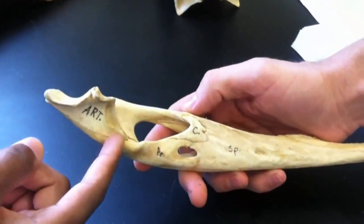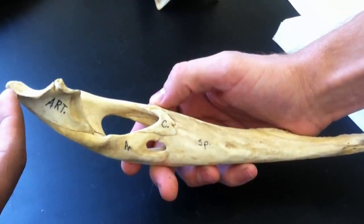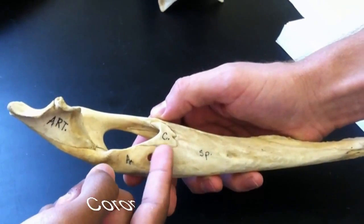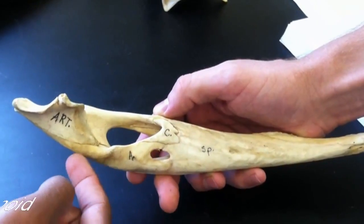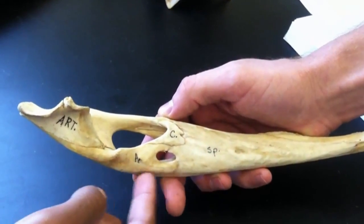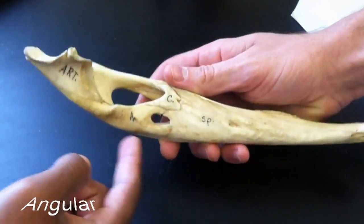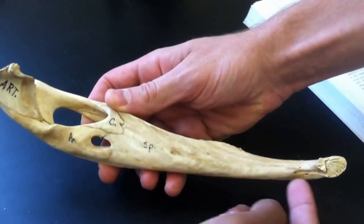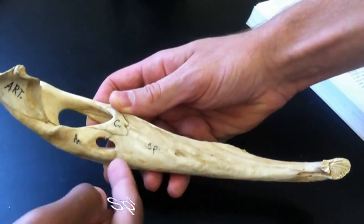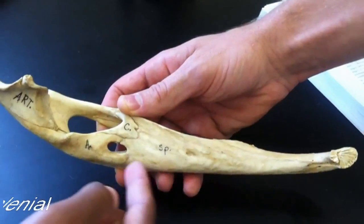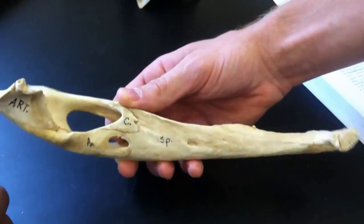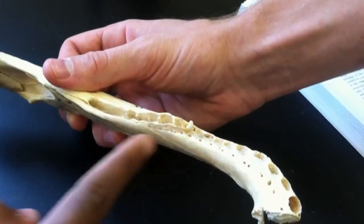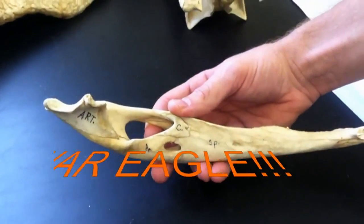And then on the other side of our hole is the coronoid, and below our hole is the angular. And then the rest of the jaw is the splenial. And you can tell this alligator was an Alabama fan because he has one tooth. And that's all.